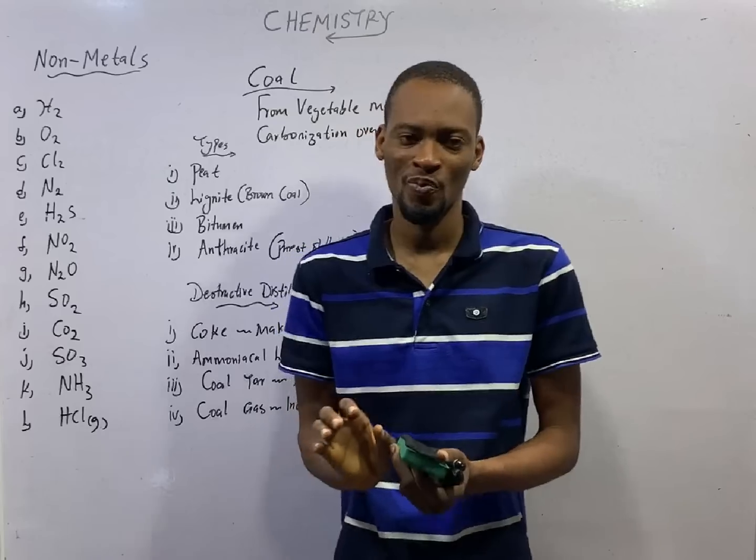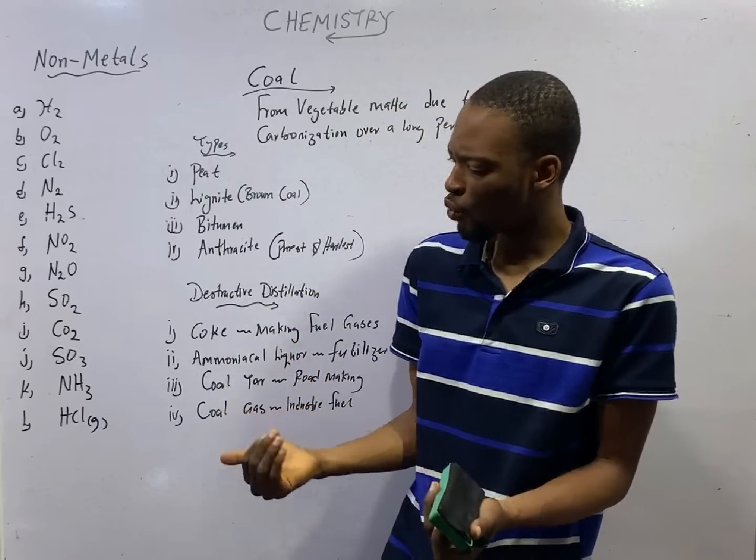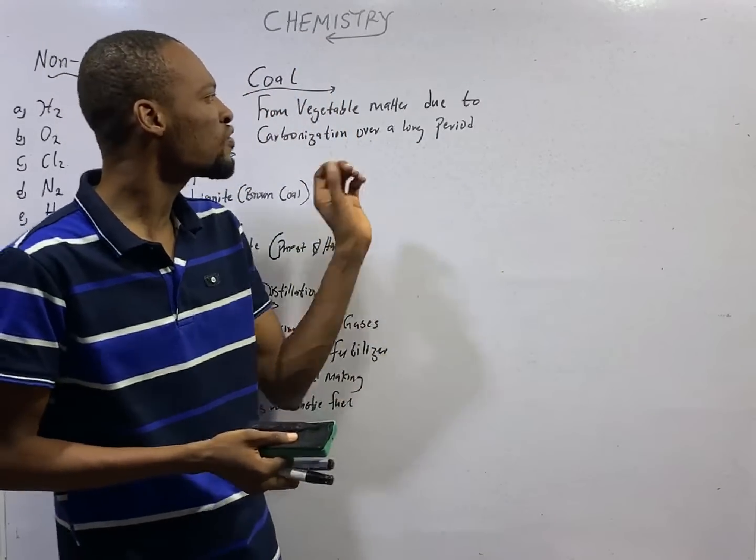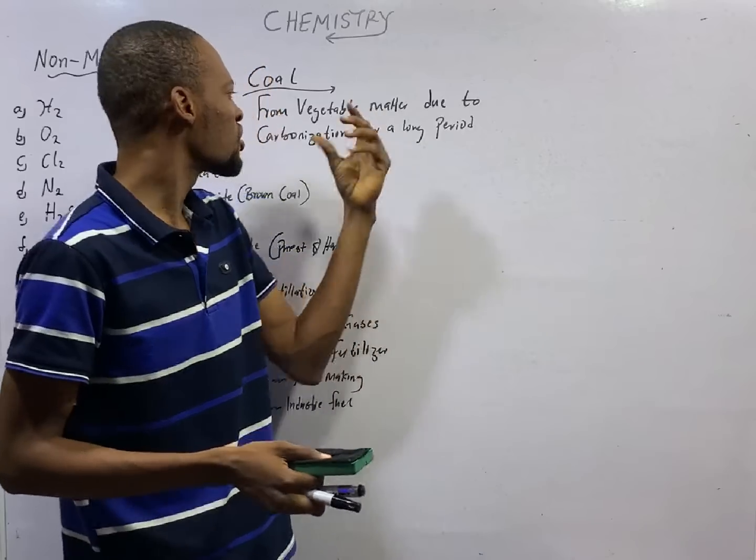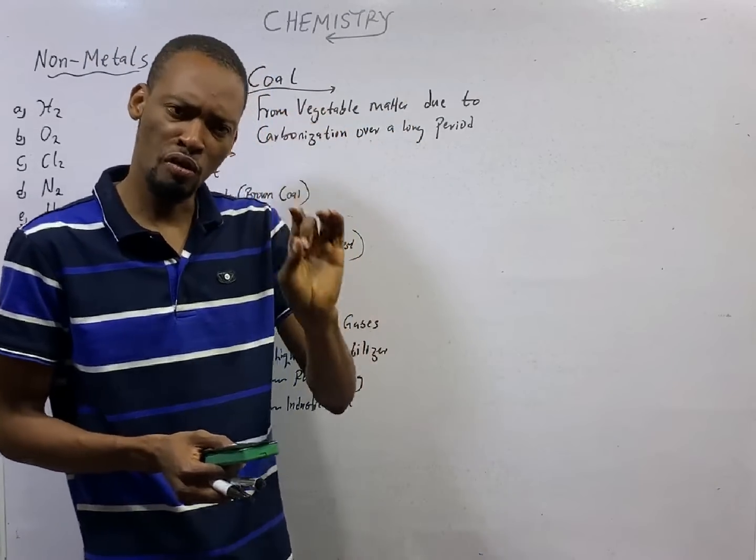What is coal or where is coal obtained from? Coal is gotten from vegetable matter due to carbonization over a long period of time.